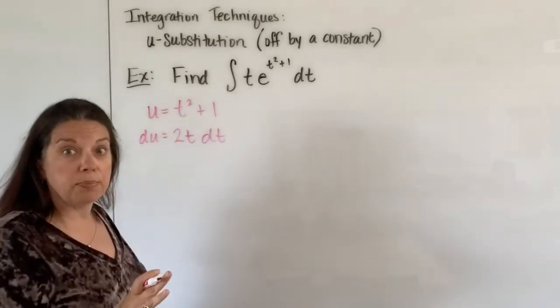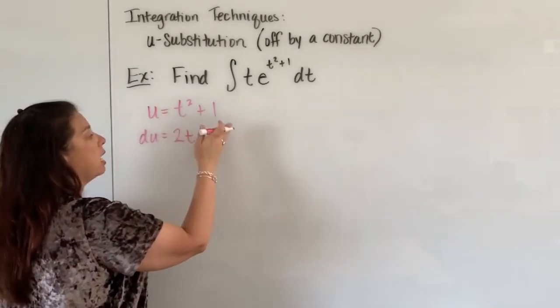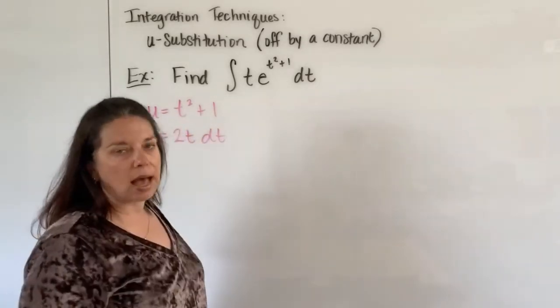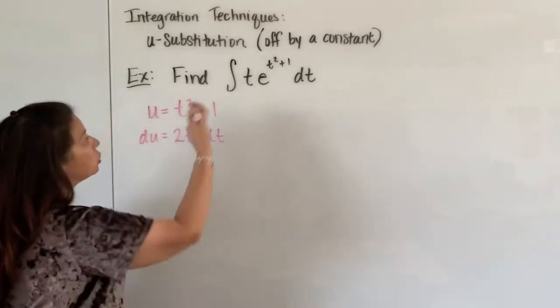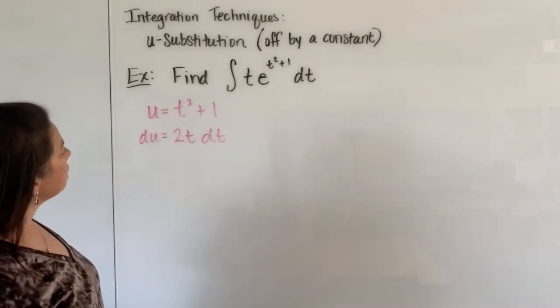Don't forget the dt part. Anytime we're taking the derivative here we definitely have to have the du on the left side and the d whatever on the right side for whatever letter you have as the input in your initial integrand. So du equals 2 times t times dt.